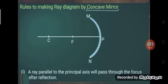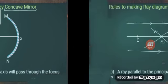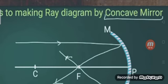So the first rule: a ray parallel to the principal axis — whether it comes from above or below the principal axis — if it comes parallel, then after reflection it will pass through the focus. After reflection, it passes through the focus. This is the first rule.